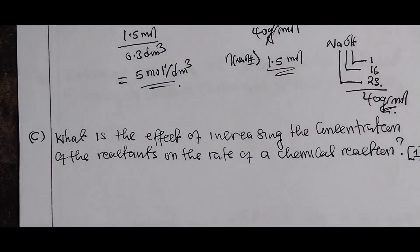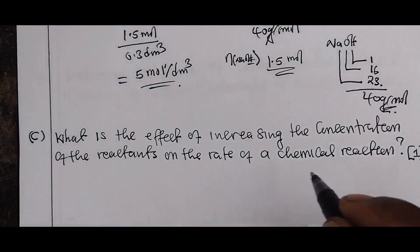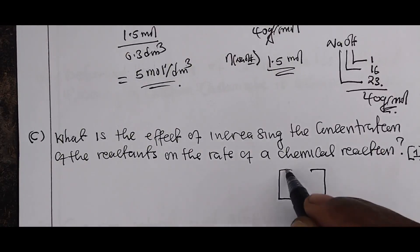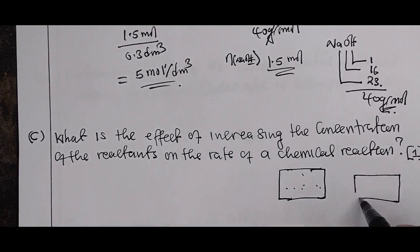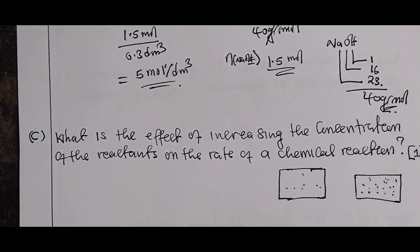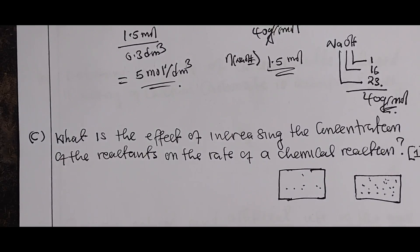If you have a small number of particles and then increase the concentration so there are a lot more of them, the particles at higher concentration will collide more easily and products can be formed more readily. So the rate of chemical reaction increases with an increase in concentration because there are more particles colliding — the chances of collision are high — and therefore products are formed more often.